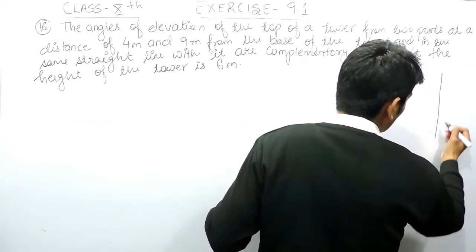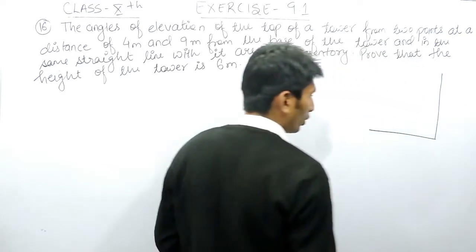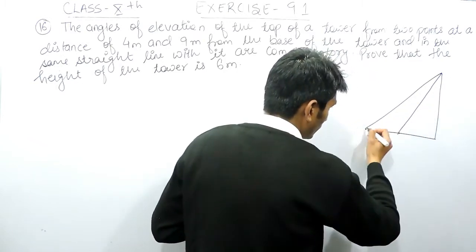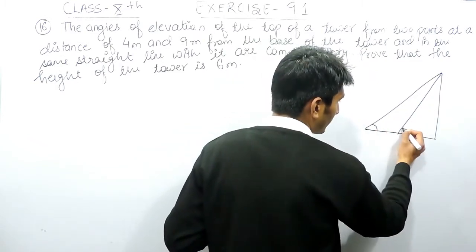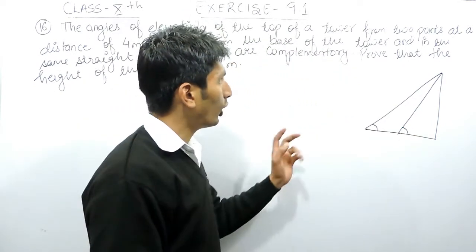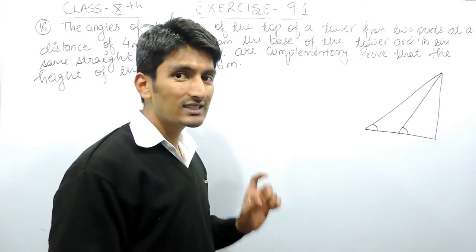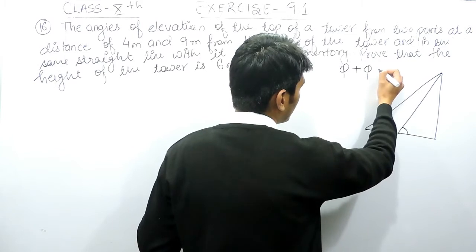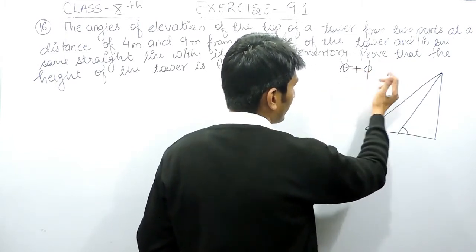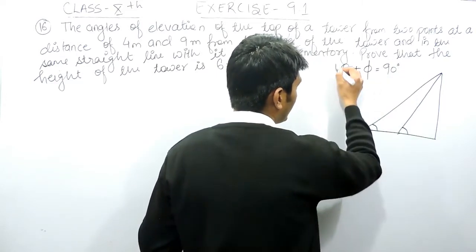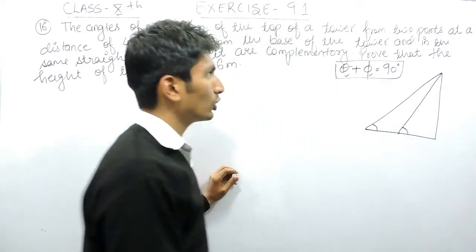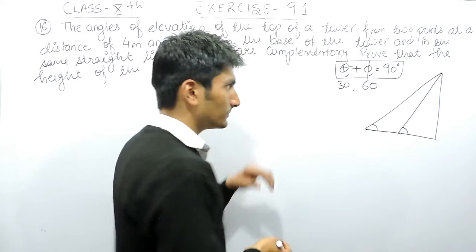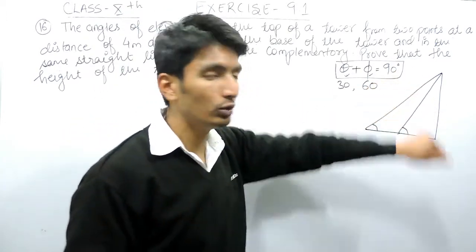There is a tower and on this road there are two objects, and the angles of elevation from these objects are complementary. Complementary basically means a pair of two angles whose sum is equal to 90 degrees. So if theta is the first angle and phi is the second angle, and their sum is 90 degrees, then they are complementary. For example, if one angle is 30 degrees, its complement must be 60 degrees.